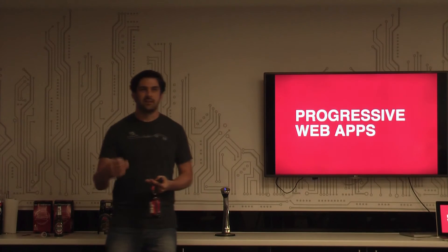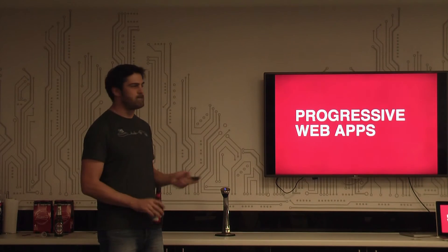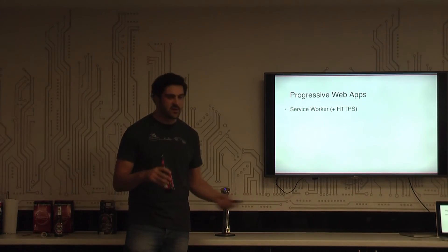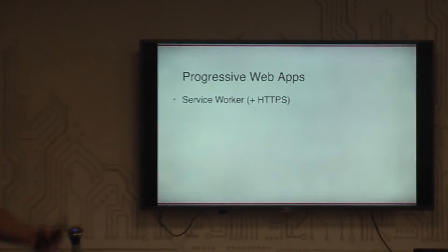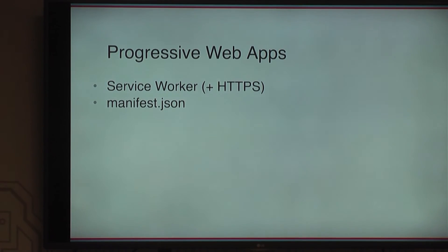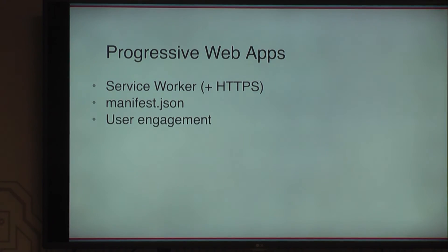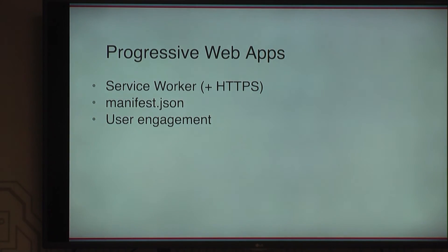This brings us to the idea of progressive web apps, a phrase Google is pushing a lot right now. It basically means we need three things: a service worker (which implies you're on a secure domain) that gives some kind of offline experience or fallback; a manifest file which lists things like the short name for your application, logos and things like that; and finally some user engagement. Browsers are still figuring out what user engagement means — sometimes it's using the same app twice within five minutes, or returning the next day.